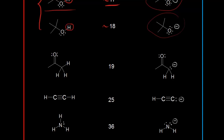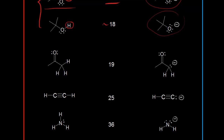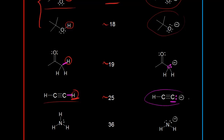The pKa value for this proton is approximately 19. If a base comes along and takes that proton, these electrons in magenta would be left behind on this carbon, giving that carbon a negative one formal charge. Next we have acetylene. If we deprotonate acetylene, this pKa has a value of approximately 25, and the electrons in magenta are left behind on this carbon to give us the conjugate base.